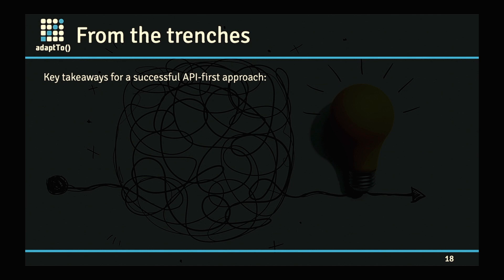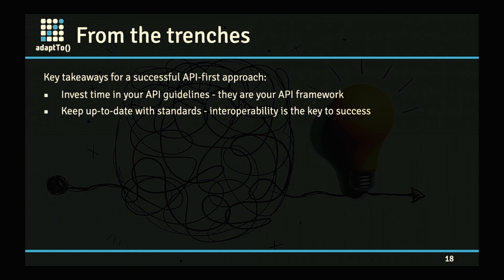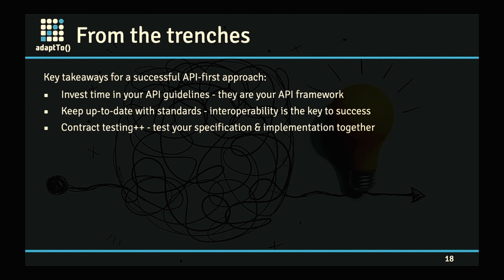What have we learned by using the API first approach and these tools? Invest time in your API guidelines. A colleague said that after working with API first, he realized he spends 90% of the time on design and 10% on implementation. That doesn't mean we're slow — it means the guidelines and API design are the most important part, and once that's cleared, the rest is easy. Keep up to date with the standards. Figure out what's new and if any errata has been published. You really want to work with standards — interoperability is the key to success. You don't want to build something exotic that locks anyone into your solution. And contract testing: test your specification and implementation together, do not disconnect them. As soon as you've done that, you've lost the game.